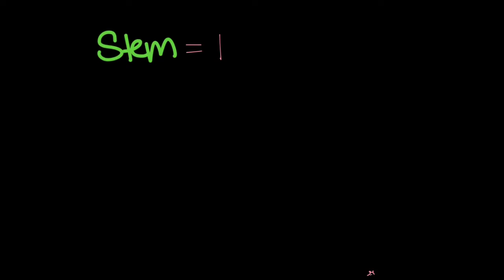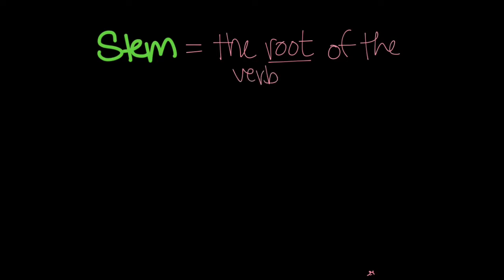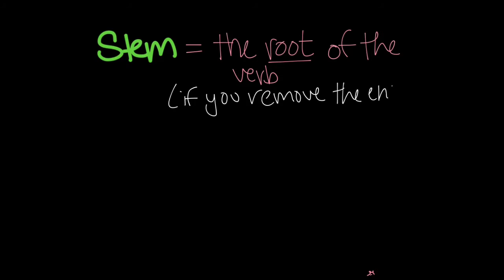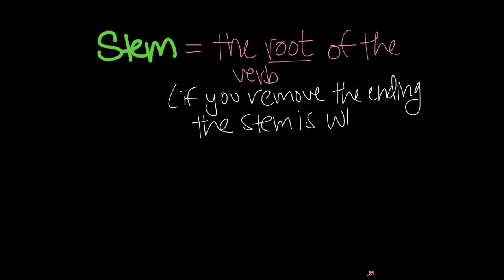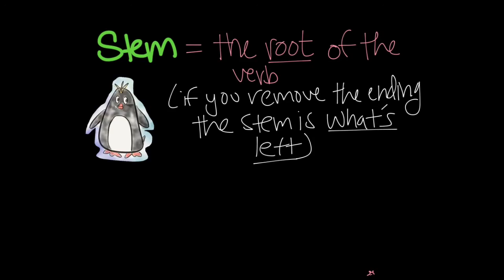So let's talk stems. What is a stem? The stem is the root of a verb without the ending. If you take off the ending of the infinitive, what you're left with is the stem — that's the part that will have some changes. For instance, with the verb hablar, you take off the ending 'ar' and you're left with 'habl.' That is your stem.